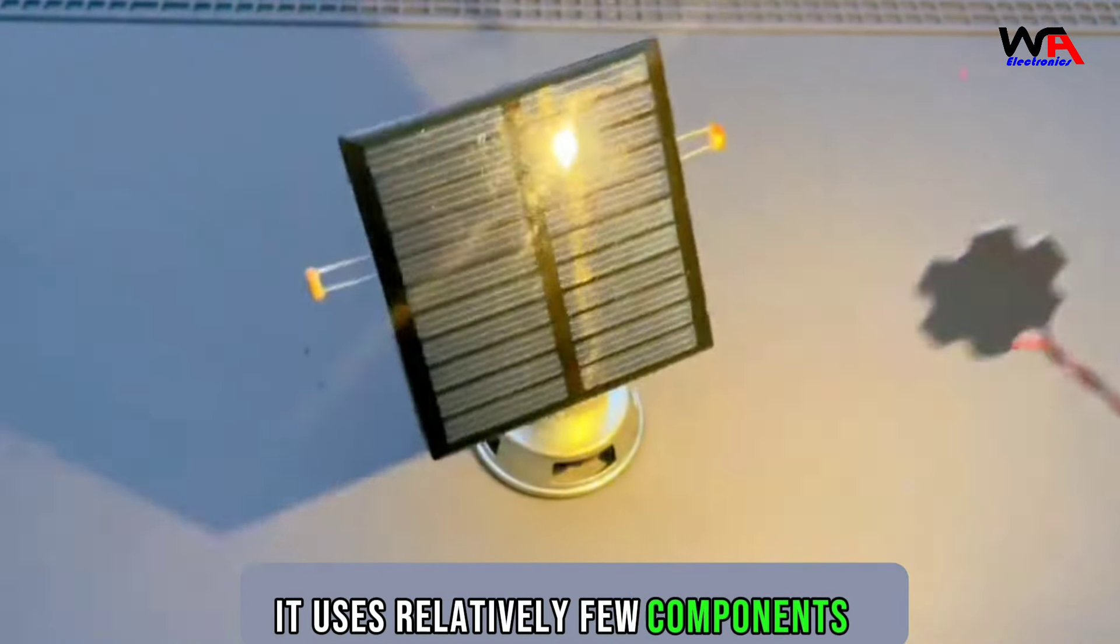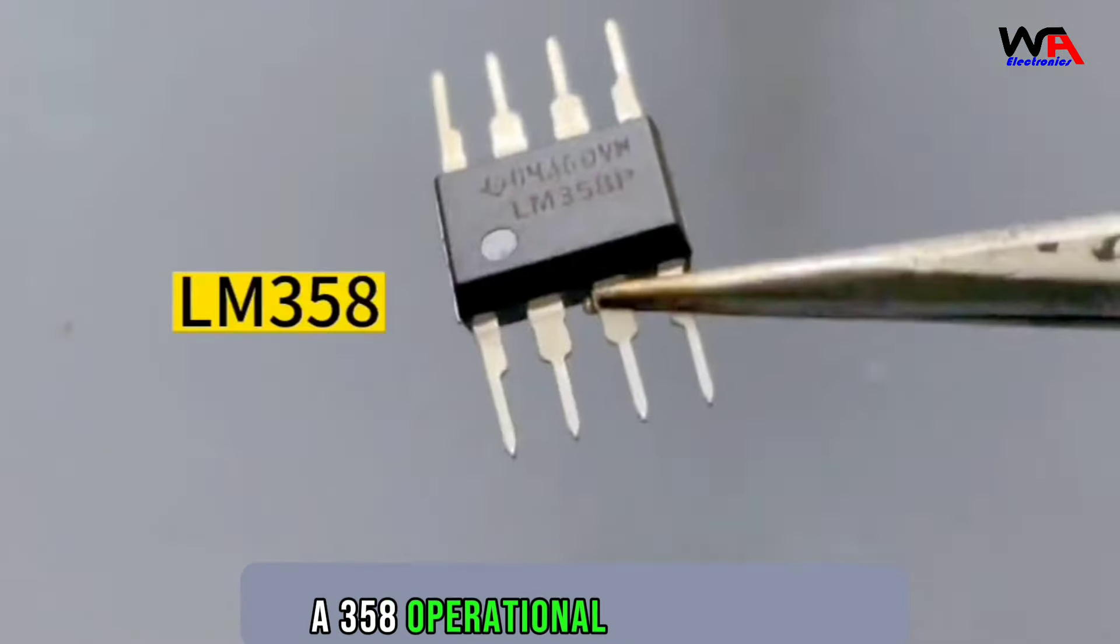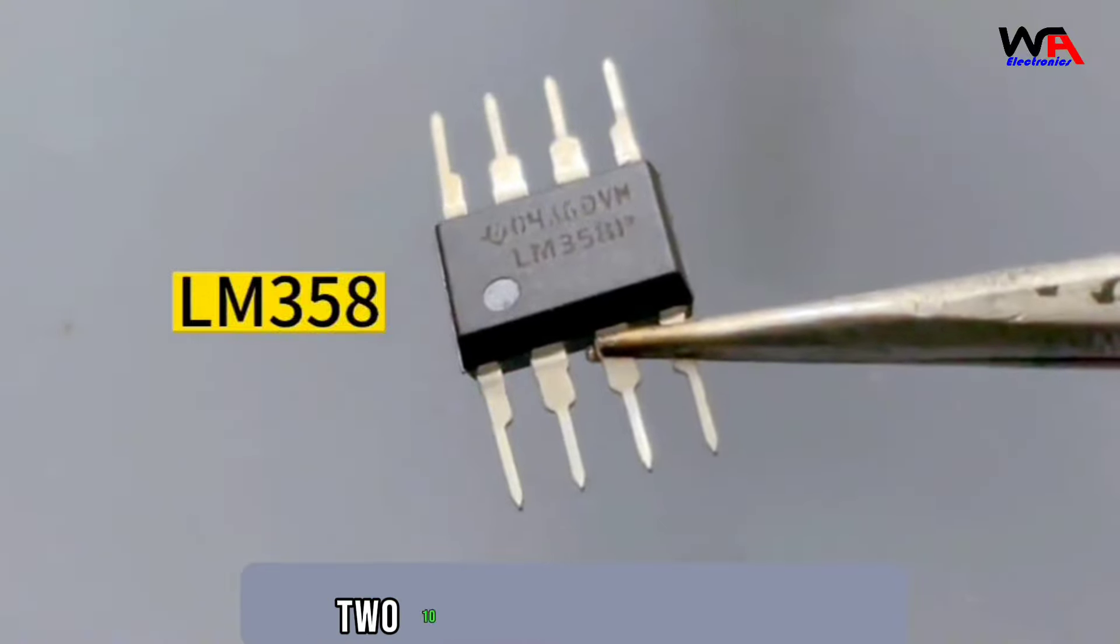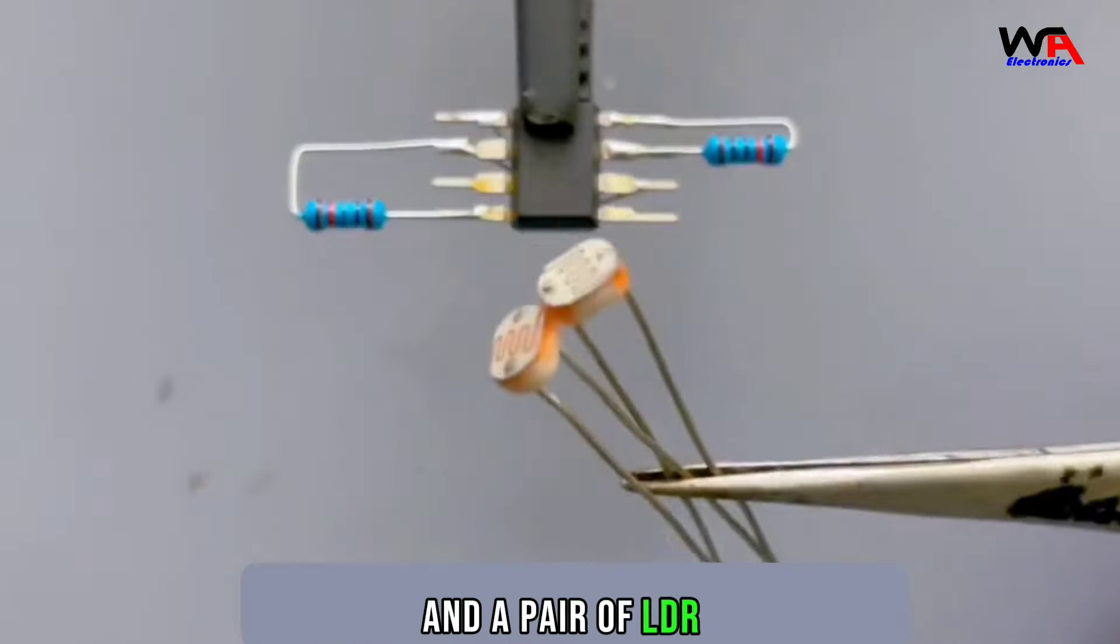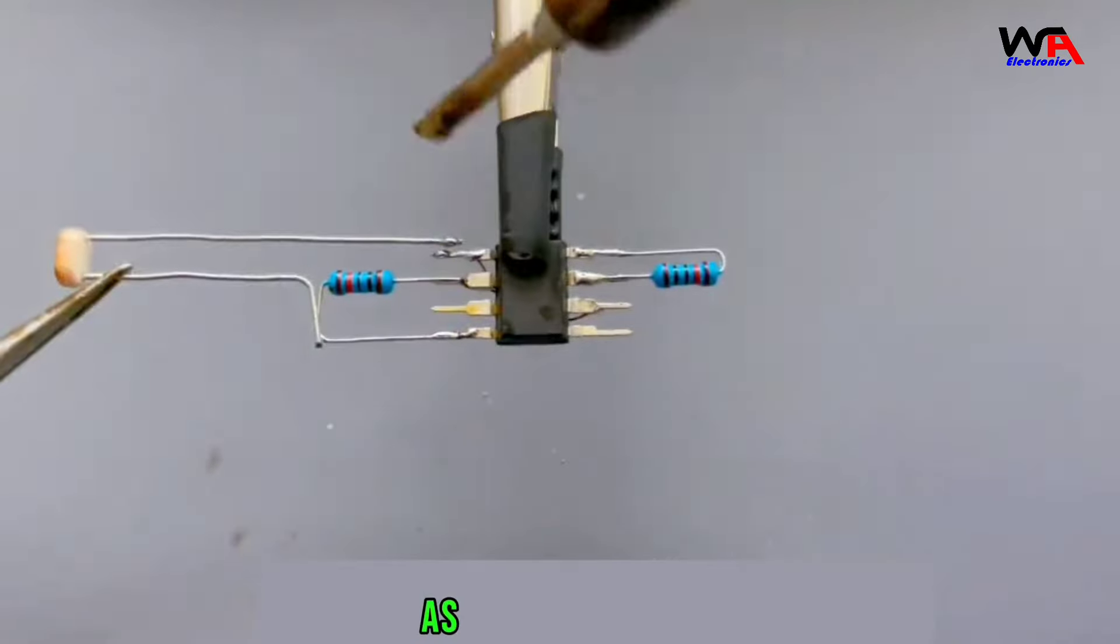It uses relatively few components: a 358 operational amplifier IC, two 10 kilo ohm resistors, and a pair of LDR. Connect all together as per schematic.